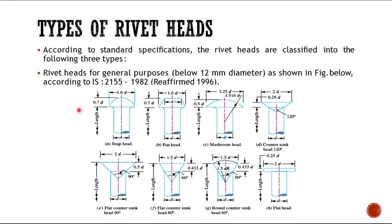These are the fixed parameters. For the snap head, the diameter of the head is 1.6 times the diameter of the rivet, and the head height is 0.5 times the diameter. For the pan head, if D is the diameter of the rivet, the bulge-out portion is equal to 1.6 times the diameter and the head height is 0.7 times the diameter.